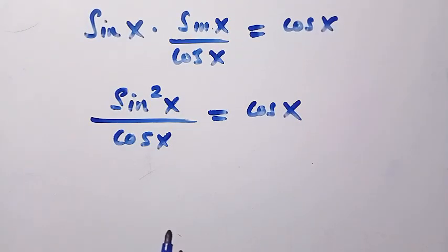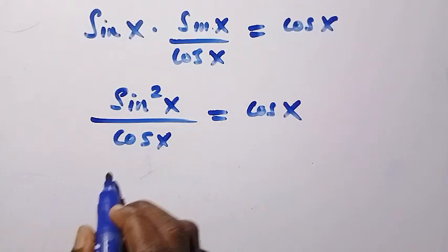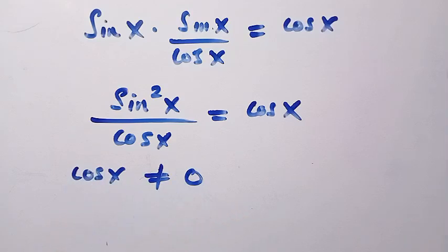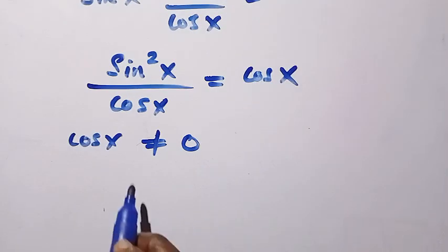At this stage, suppose our cos x is not equal to 0. So if cos x is not equal to 0, then let's multiply both sides by cos x.